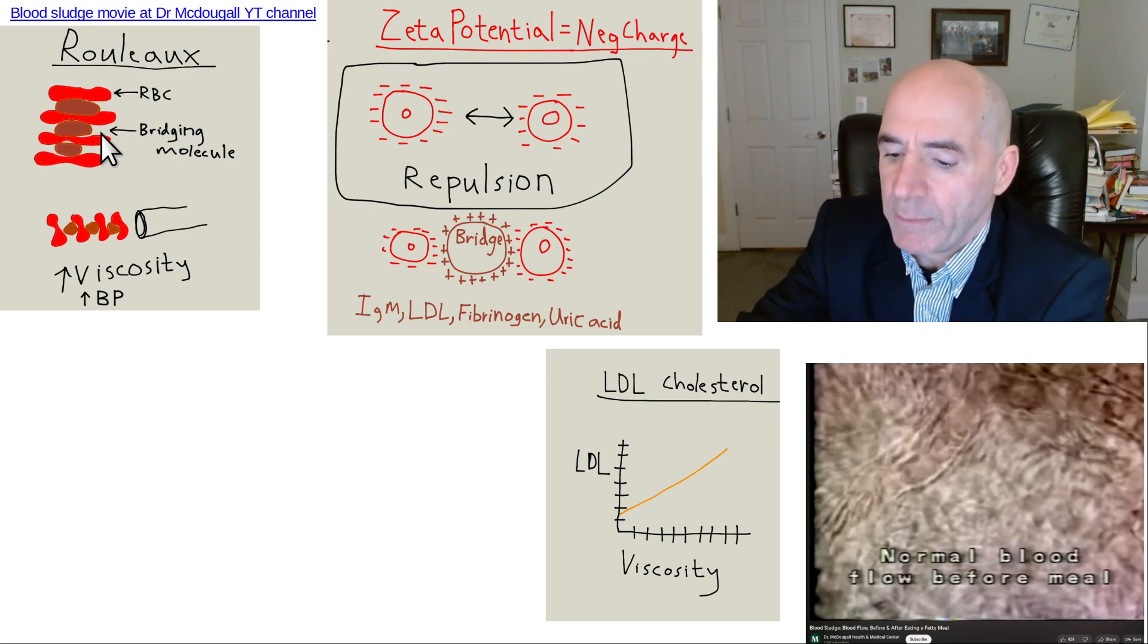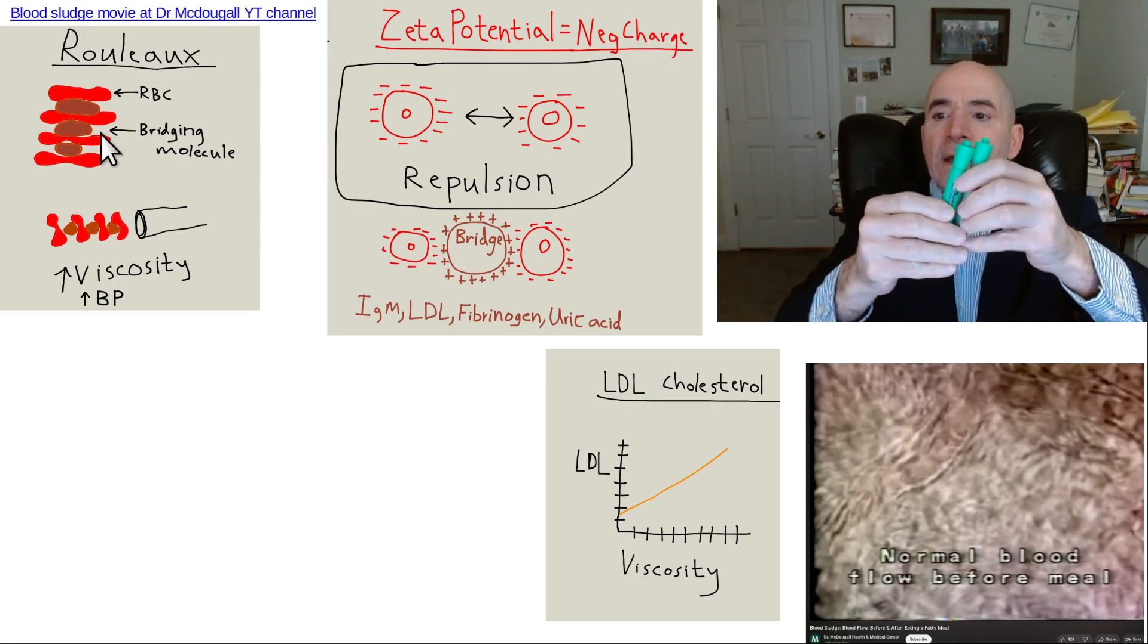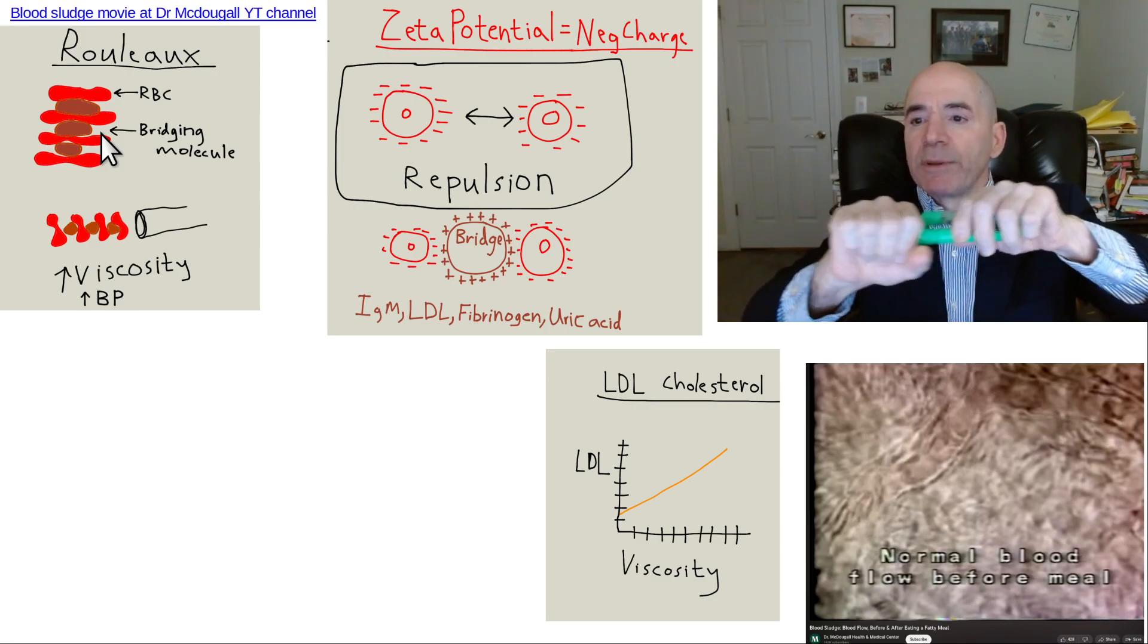So if you stick them together, imagine these are red blood cells even though they're green. Then they're going to be bigger. It's going to be harder for them to get through that capillary.